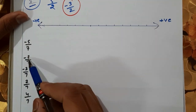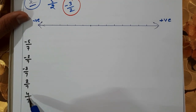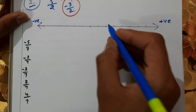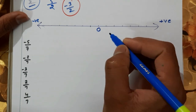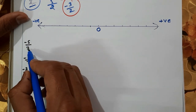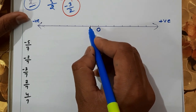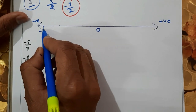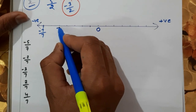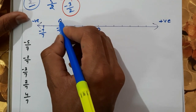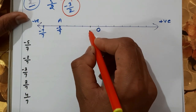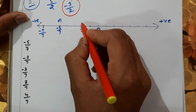Now we are going to represent minus 5/7, minus 2/7, minus 3/7, 2/7, and 4/7 on the number line. First, we represent 0. The denominator is 7, so we divide each unit into 7 parts. On the left side of 0: minus 1/7, minus 2/7 is point B, and minus 3/7 is point C. On the right side of 0, counting 1/7, 2/7 is point D, and 4/7 is point E. Minus 5/7, going left: minus 1/7, minus 2/7, minus 3/7, minus 4/7, minus 5/7 is point A.